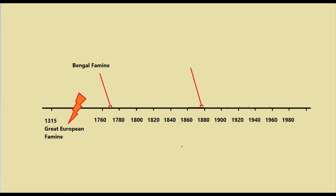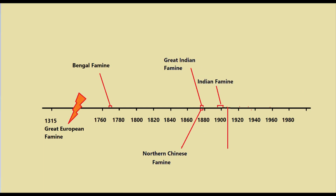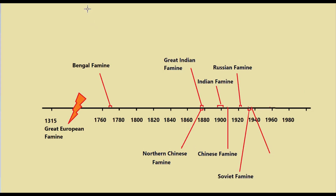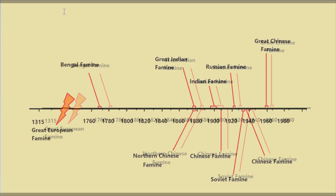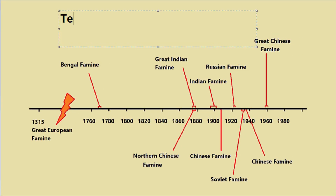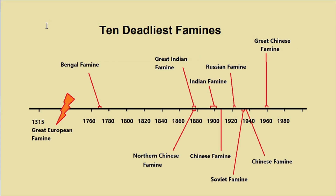From then on, starting from 1750, place the events on the timeline accurately beside or above or below the correct date. If an event spans more than one year, I will use a forked line. Give your timeline a title, for example, the 10 deadliest famines.